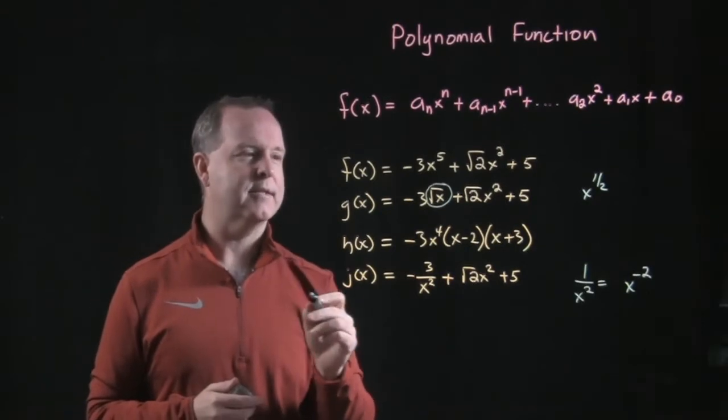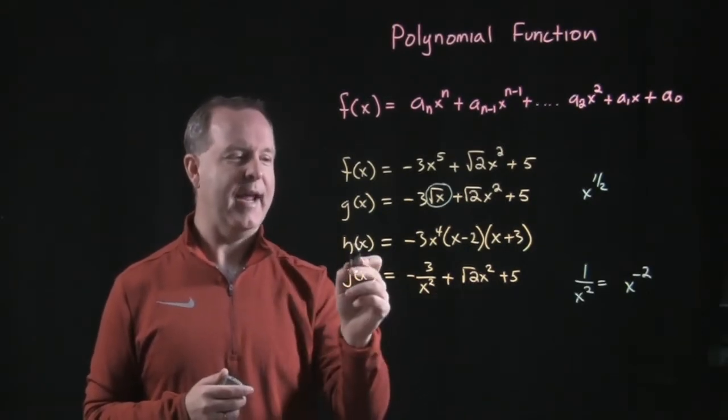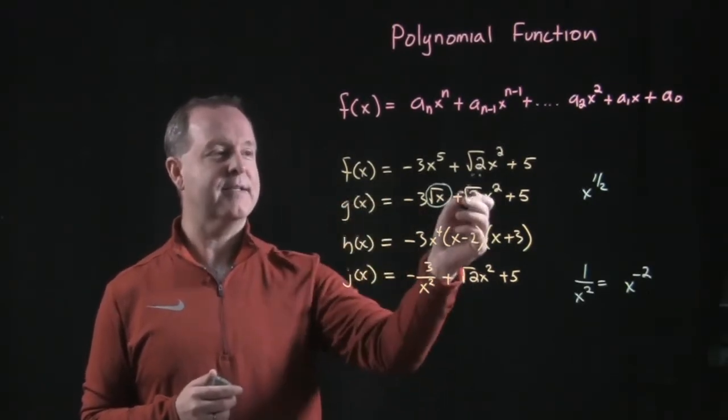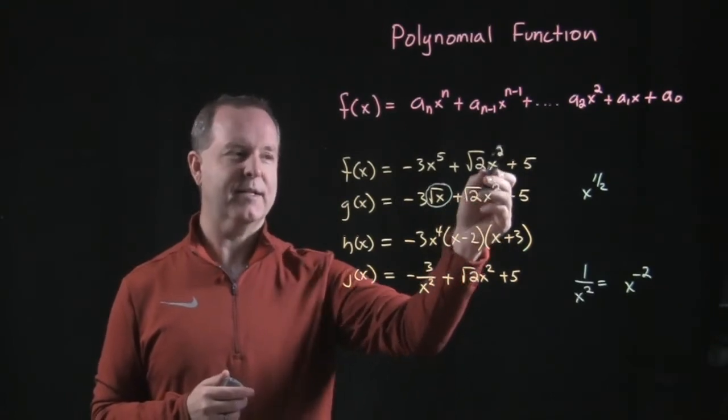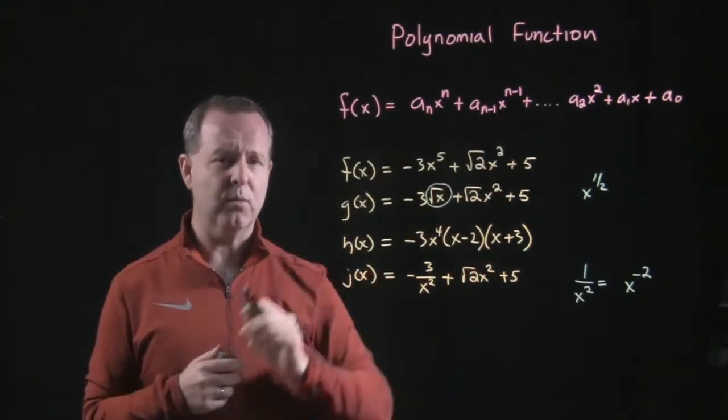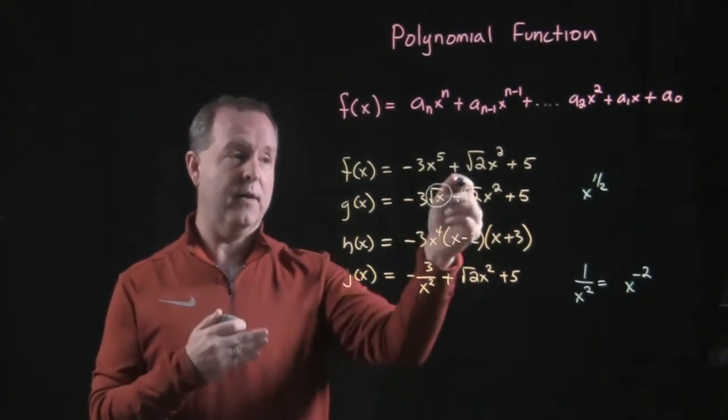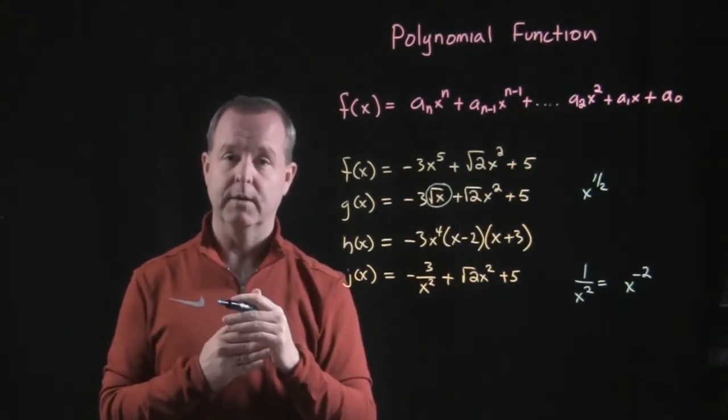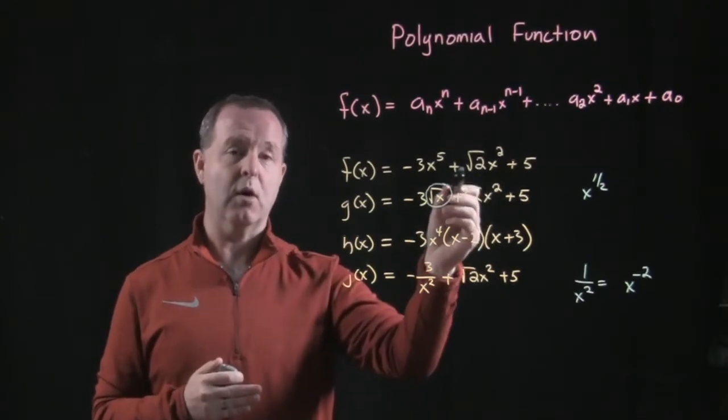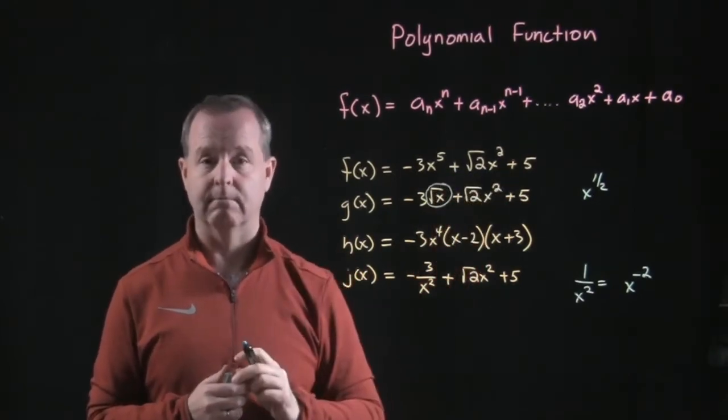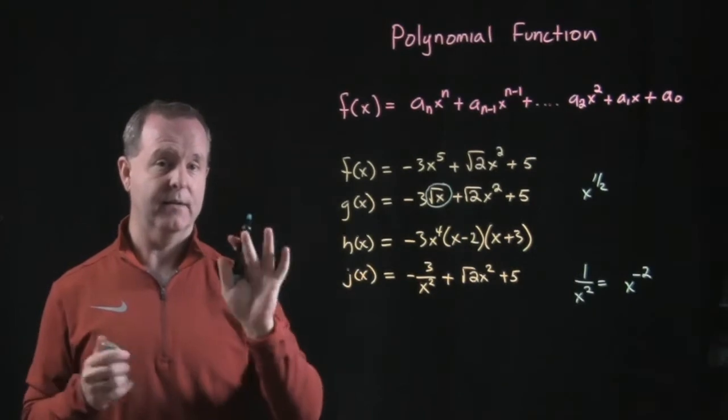Now, some of you guys might have been looking at it like, well, wait a minute. F of x has a square root of two, x squared. Doesn't that disobey the rule? No, it doesn't. Because it's only the square root of two, or it's only the two that's underneath the square root. So, square root of two is a coefficient to the x squared term. And that's completely fine. We can do that.